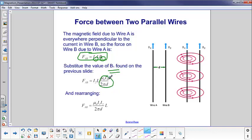So, I have I2, I have I1, I have L, I have the distance. I do a little rearranging of this equation to make it look prettier. I put the I's next to each other, and the force that wire A exerts on wire B due to its magnetic field is mu0 I1 times I2 times L divided by 2 pi d.